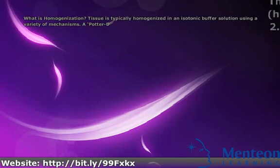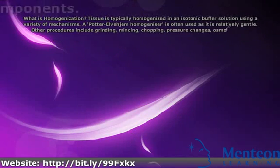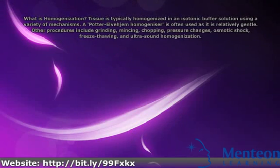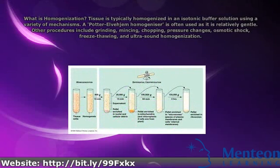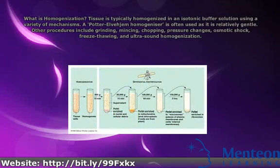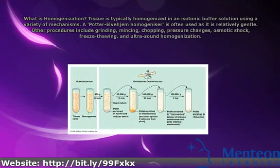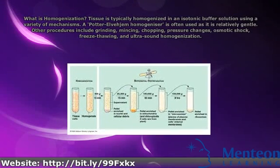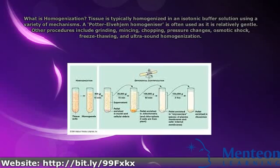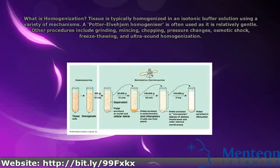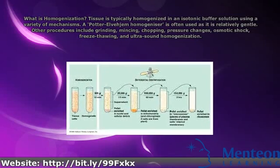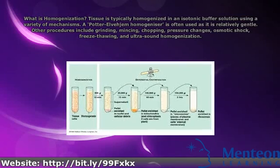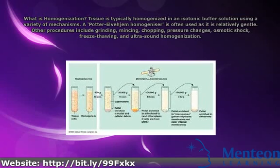What is homogenization? Tissue is typically homogenized in an isotonic buffer solution using a variety of mechanisms. A Potter-Elvehjem homogenizer is often used as it is relatively gentle. Other procedures include grinding, mincing, chopping, pressure changes, osmotic shock, freeze thawing, and ultrasound homogenization.